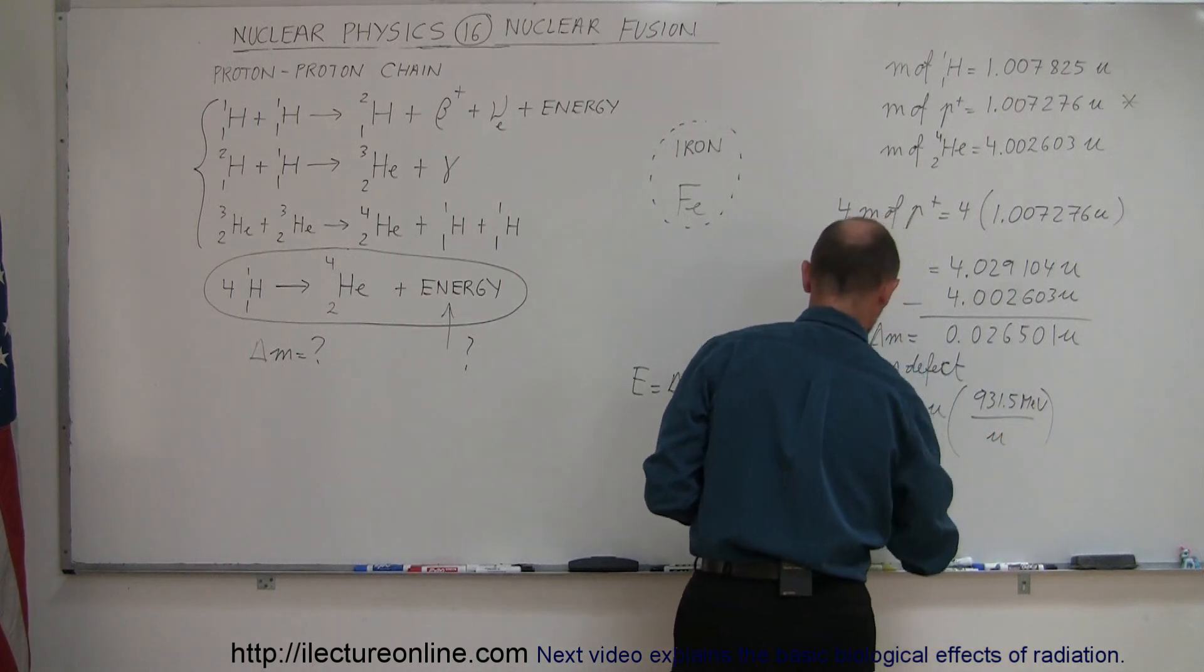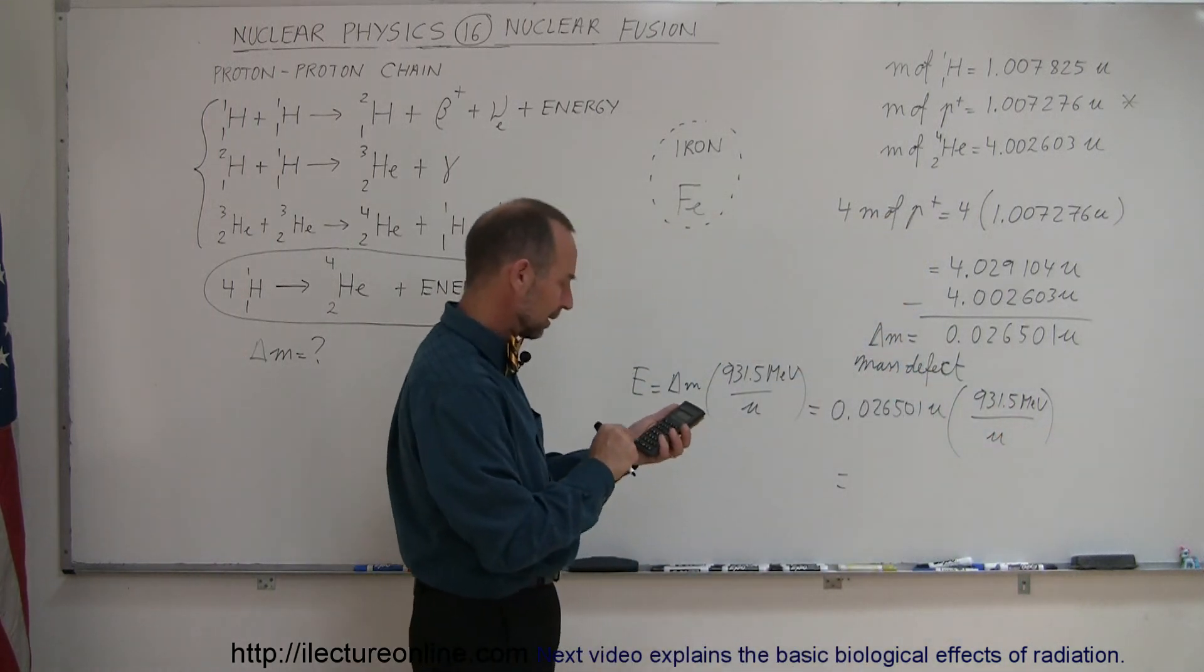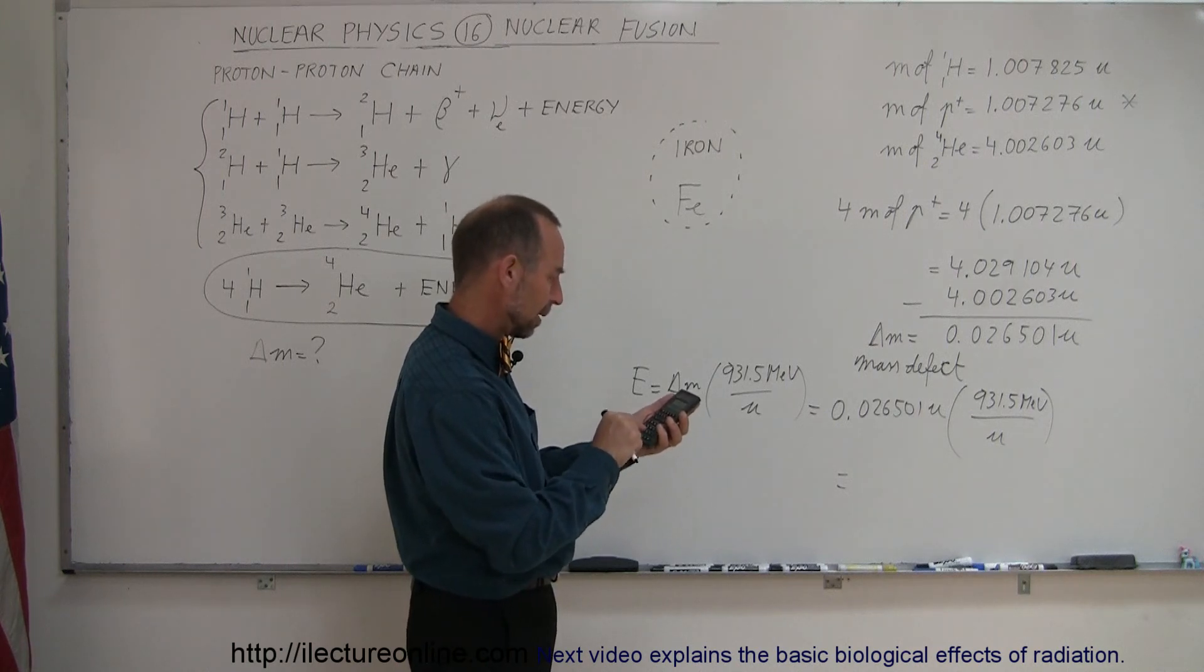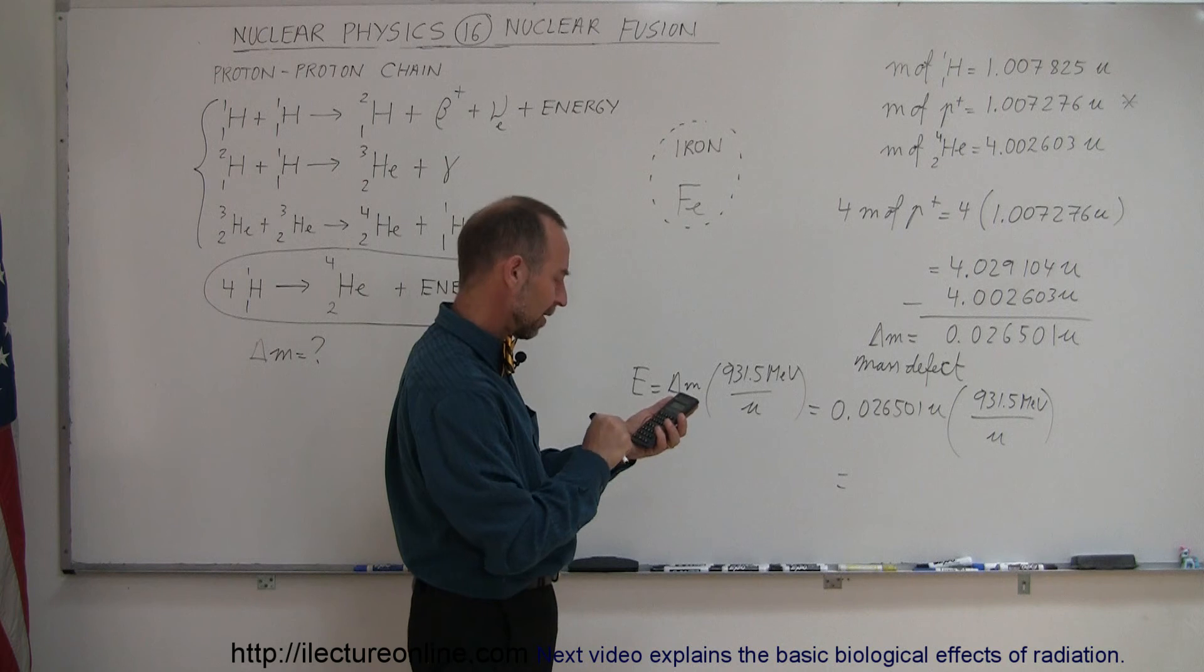In our case, that's equal to 0.026501 atomic mass units times 931.5 MeV per atomic mass unit. So if we do that in the calculator: 0.026501 times 931.5 equals...